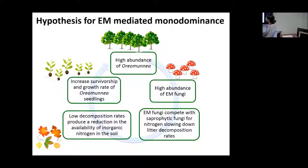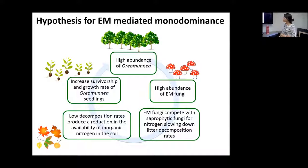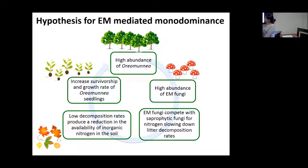After all this, we came up with a feedback loop diagram showing what we think is happening. High abundance of Oremunia causes high abundance of ectomycorrhizal fungi in the soil. These ectomycorrhizal fungi compete with saprotrophic fungi for nitrogen, absorbing it directly from the organic matter, so saprotrophs no longer have access to enough nitrogen to mineralize it to inorganic forms — it stays locked in the fungal biomass. This causes low decomposition rates and reduces inorganic nitrogen availability in the soil, which increases the survivorship and growth rate of Oremunia seedlings, in turn increasing Oremunia abundance.